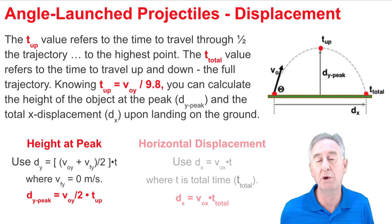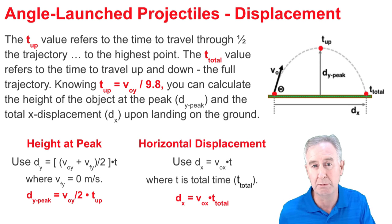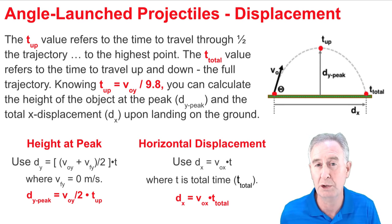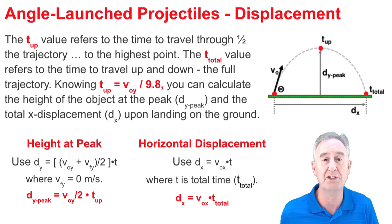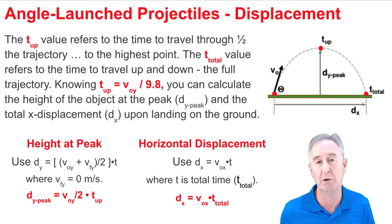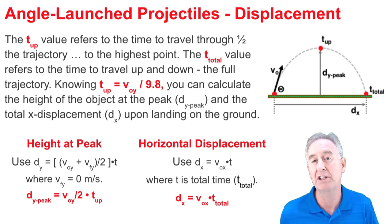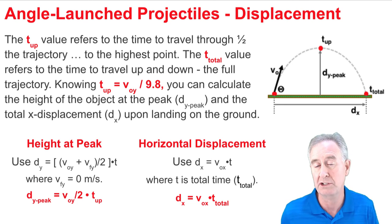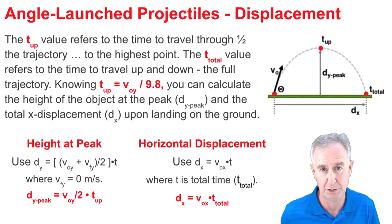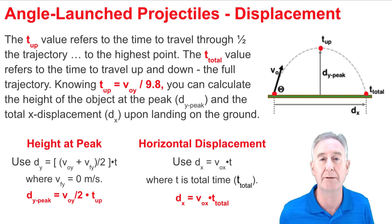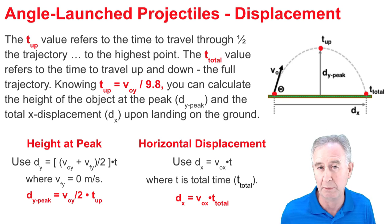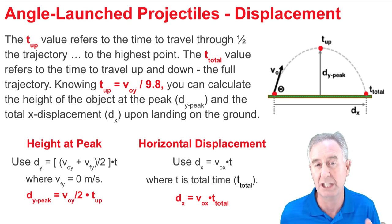To calculate the total horizontal displacement, I would use the only equation I ever use for that: dx equals v original x times t. But the t in this equation is the total time, so that equation becomes dx equals v original x times t total.